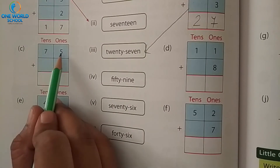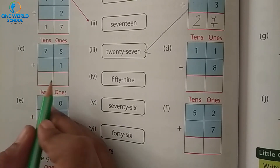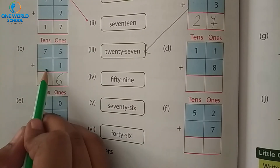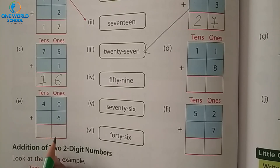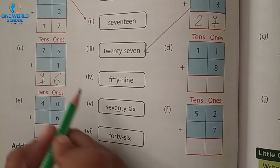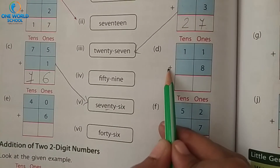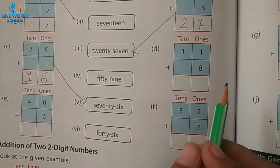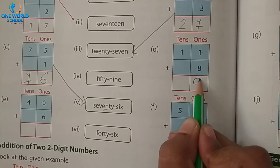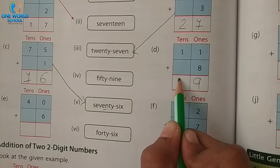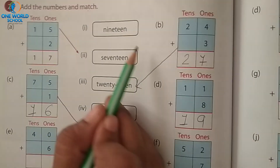Number C: 75 plus 1. Ones ki place se: 5 plus 1 equals 6. And 7 plus 0 equals 7. Answer is 76. Match it where 76 is written. Number D: 11 plus 8. Ones ki place se: 1 plus 8 equals 9. And 1 plus 0 equals 1. Answer is 19. Match it where 19 is written.